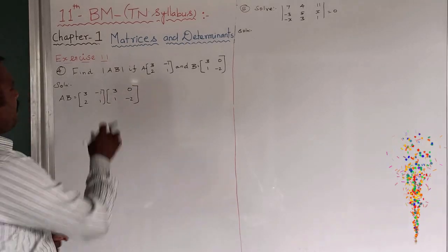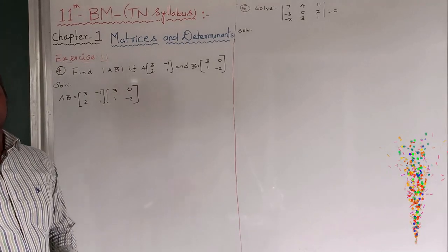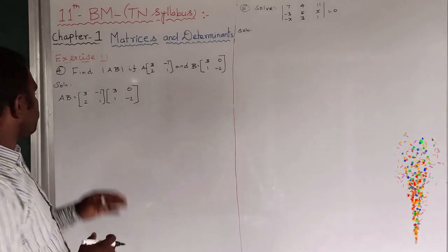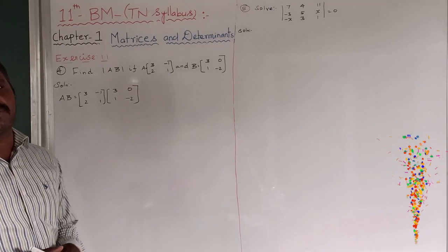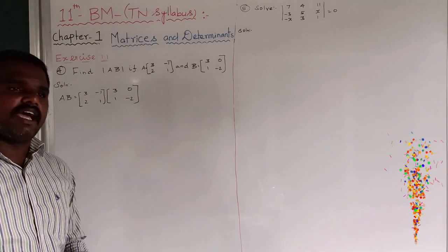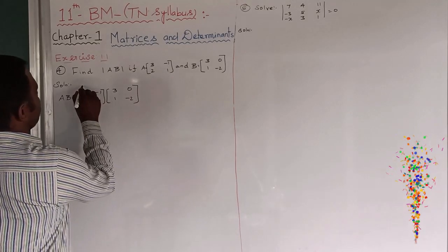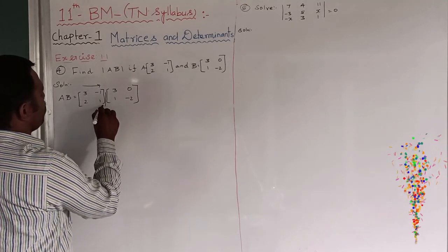This is a 2 by 2 matrix. So, what is the modulus of A into B? First people, find out what is A into B. A into B is the product of the two matrices. We already know that it is a row into column multiplication.